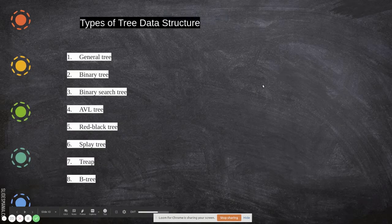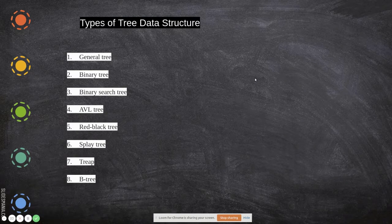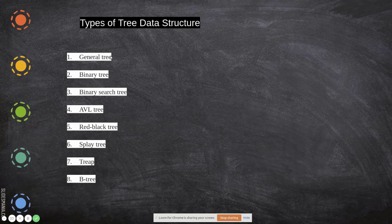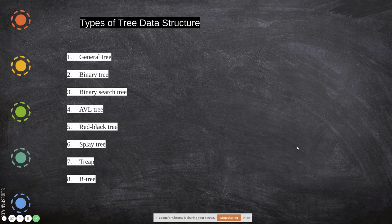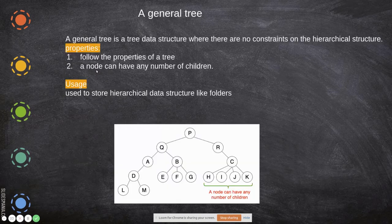In this video we will be seeing what are the different types of tree data structures available. We will see a few: general tree, binary tree, binary search tree, AVL tree, red-black tree, splay tree, treap, and B-tree.